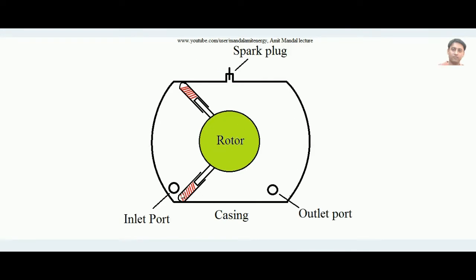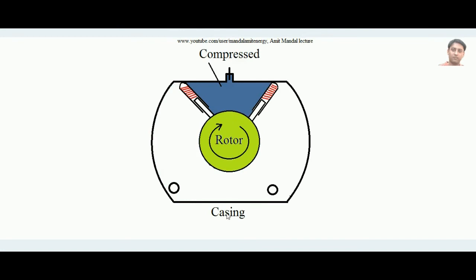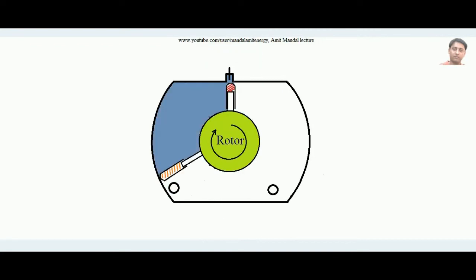Now, in the actual Wankel's rotary engine, the casing and rotor system has an inlet port and an outlet port — holes through which charge enters and exhaust gases exit — along with a spark plug. Suppose a mixture of petrol and air is contained in a region, and the rotor starts spinning clockwise. Initially the charge occupies a greater volume, and as it rotates it is compressed to a smaller volume.